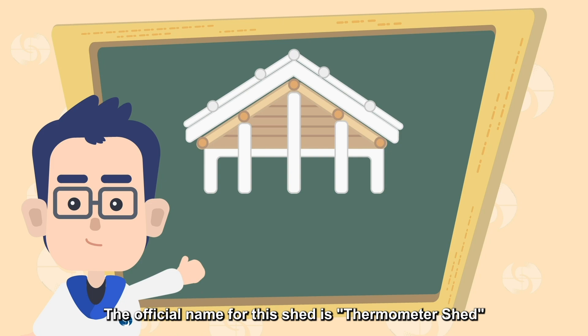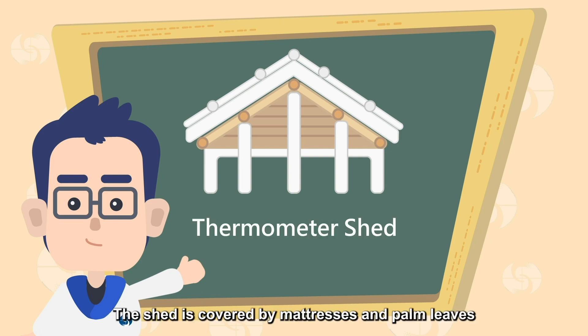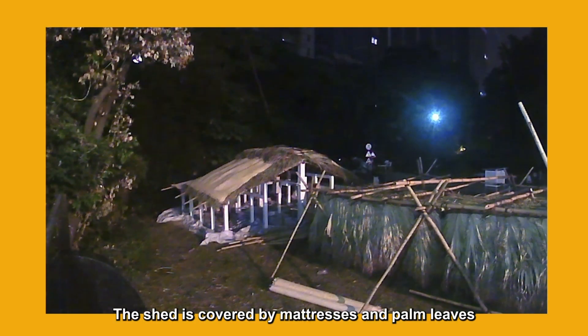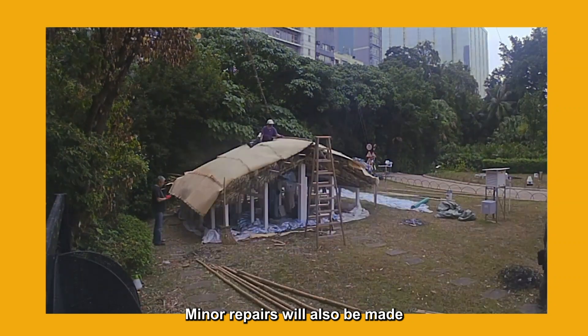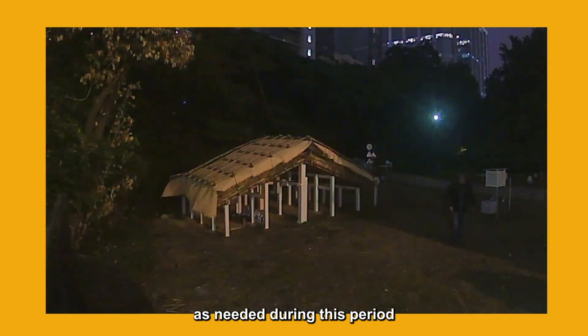The official name for this shed is Thermometer Shed. The shed is covered by mattresses and palm leaves. Generally, it'll be resurfaced or have a major repair every five years. Minor repairs will also be made as needed during this period.